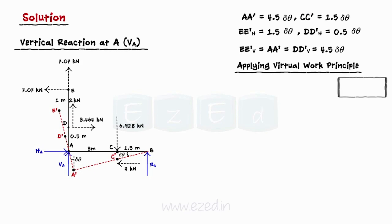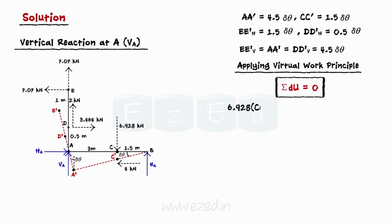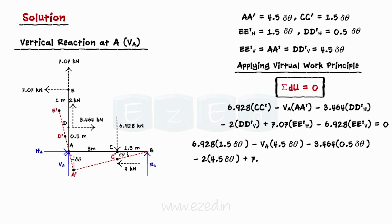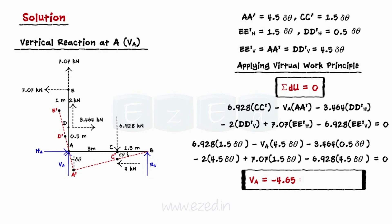Applying the principle of virtual work, we get summation dU = 0. We can now directly multiply the forces acting at points C, A, D, and E with the respective displacements CC', AA', DD', and EE' respectively. We must remember that both points D and E will have displacements in both horizontal and vertical directions. On substituting the forces and their virtual angular displacements and then simplifying, we get the vertical reaction at A equal to 4.65 kN acting downwards.